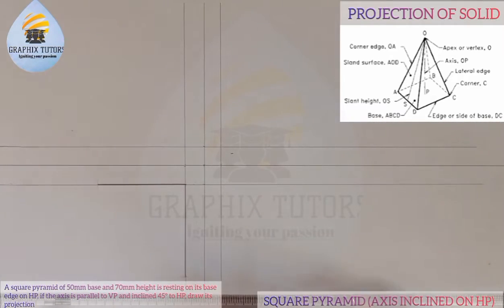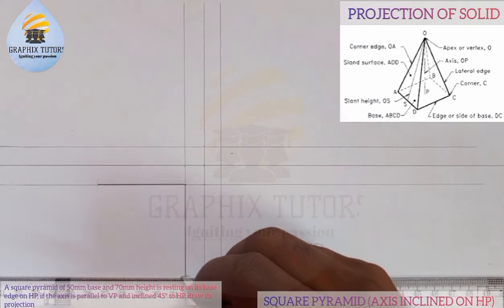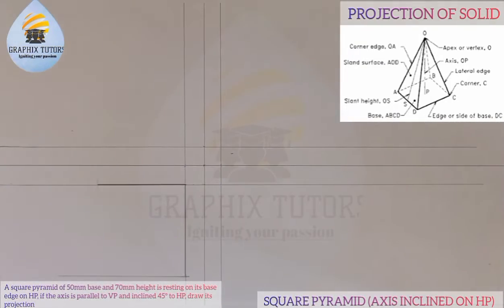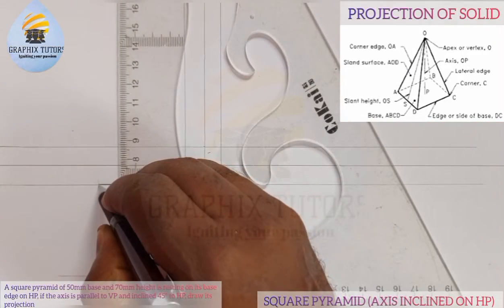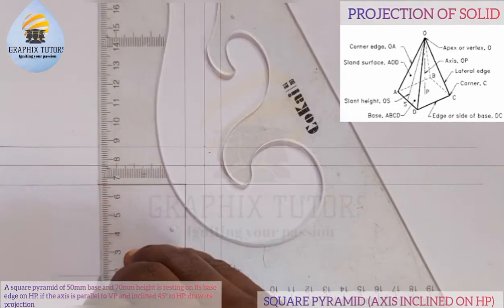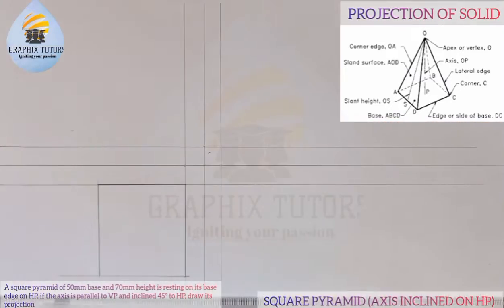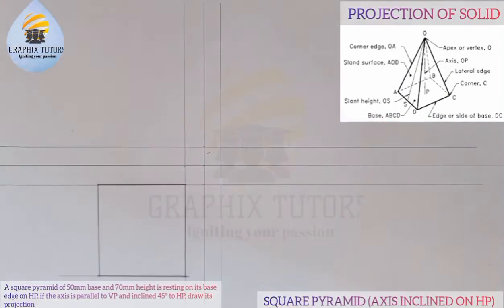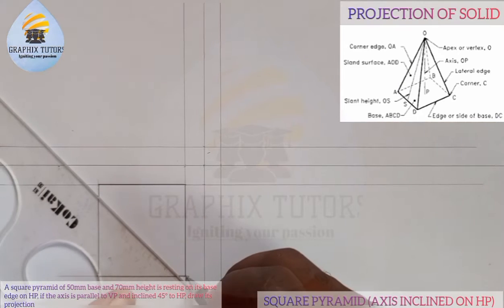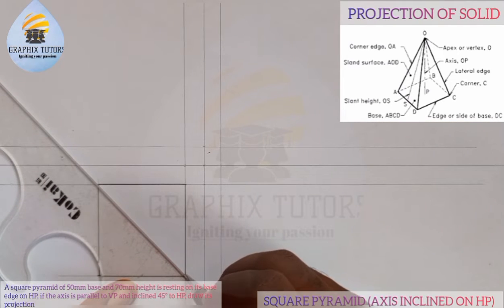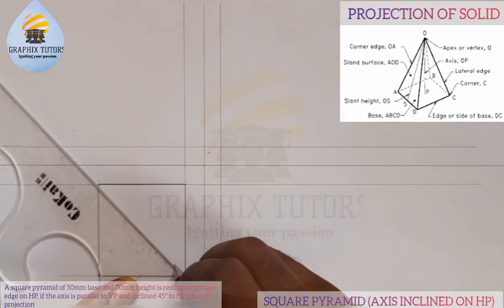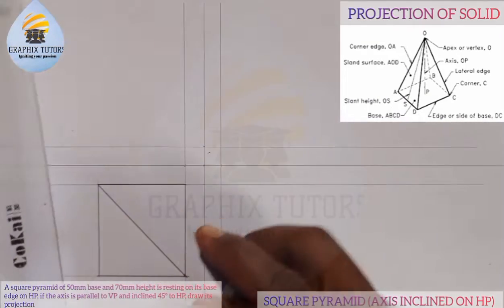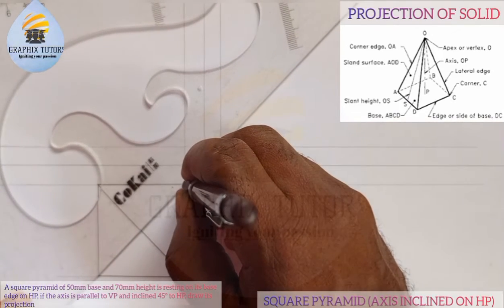I'll do the same thing at this next point, checking the distance from here to this point. And here also. Now from here, I'm going to join all diagonals together, just like you can see in the diagram — all diagonals joined together.